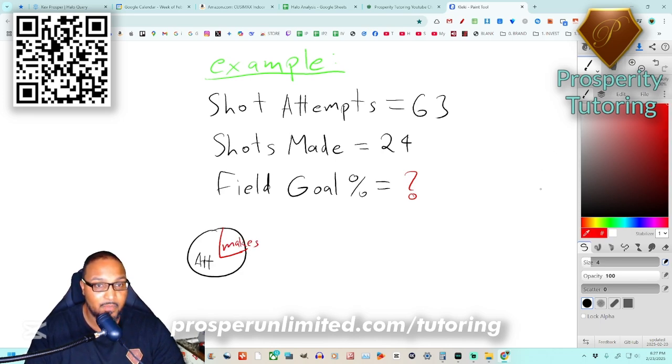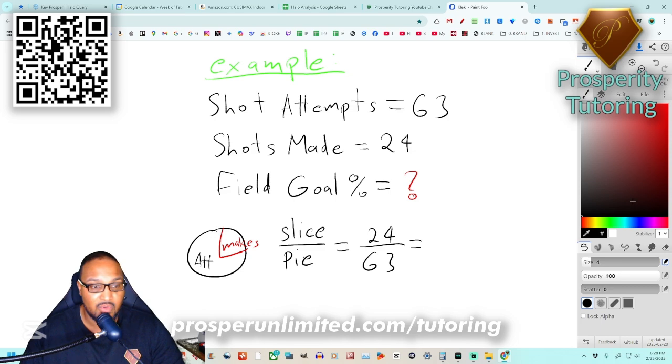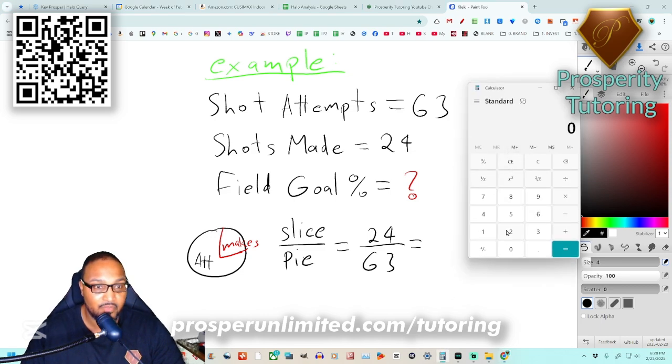The way I figure out my field goal percentage, I like to say you divide the slice by the pie. So in this instance the slice would be the 24 shots that I made and the pie would be the 63 shots that I attempted. When we put it in our calculator we type in twenty-four divided by sixty-three.